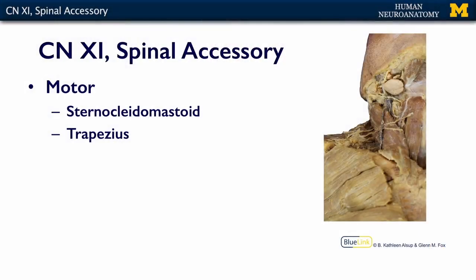Cranial nerve 11 is the spinal accessory nerve. Some people just call it the accessory nerve — you'll see both terms, spinal accessory or accessory — but the bottom line is it's simply a motor nerve. It innervates two muscles: the sternocleidomastoid muscle and the trapezius muscle.